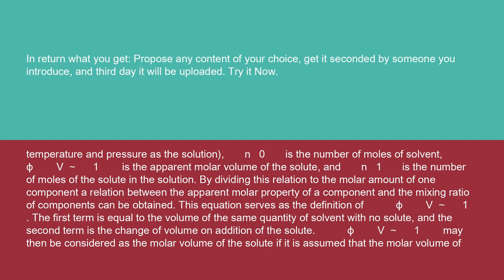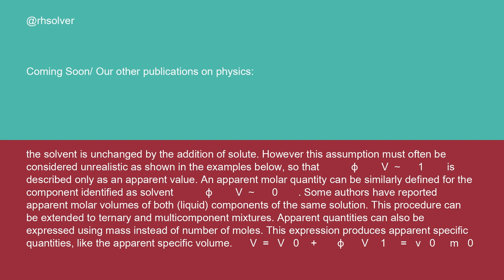The first term is equal to the volume of the same quantity of solvent with no solute, and the second term is the change of volume on addition of the solute. φV₁ may then be considered as the molar volume of the solute if it is assumed that the molar volume of the solvent is unchanged by the addition of solute. However, this assumption must often be considered unrealistic, so that φV₁ is described only as an apparent value.